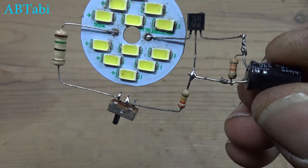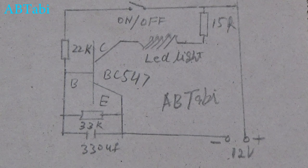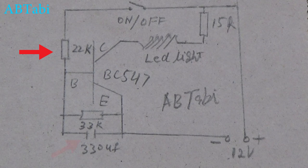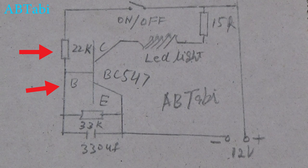Friends, circuit working principle is: when we turn on the switch, 22k resistor charges slowly to the 330 uF capacitor and also gives voltage to transistor base. Due to capacitor charging, voltage on base slowly rises up.